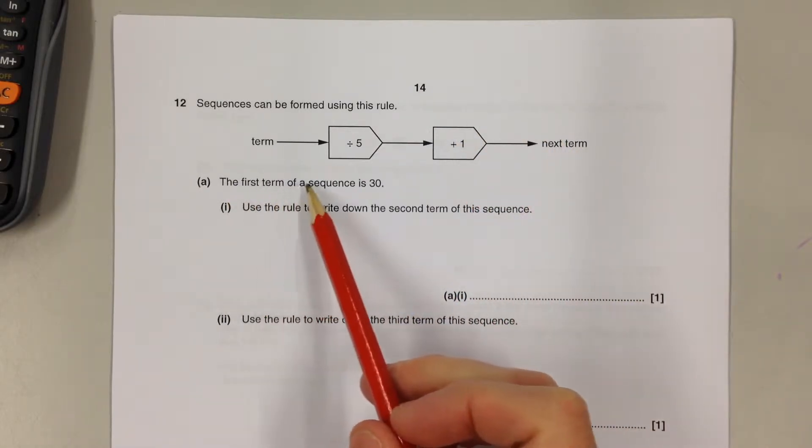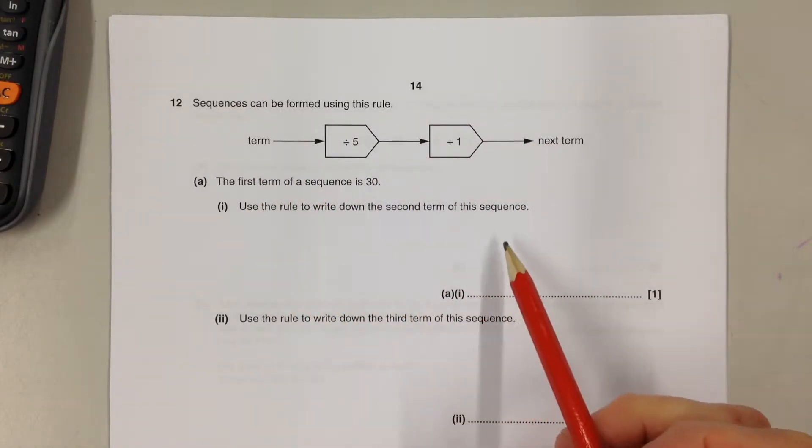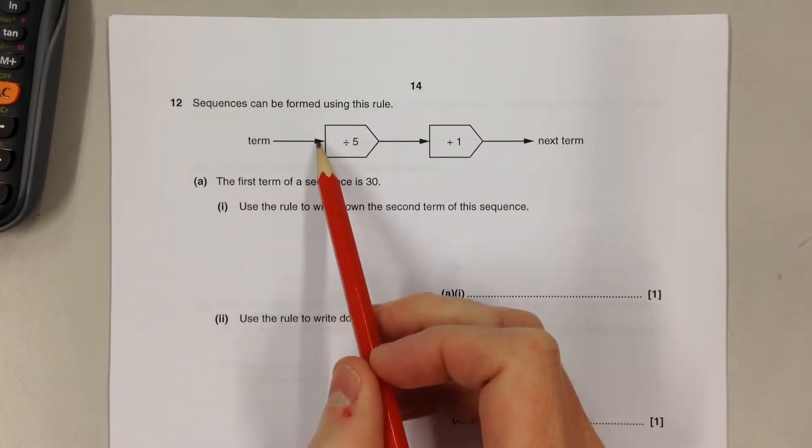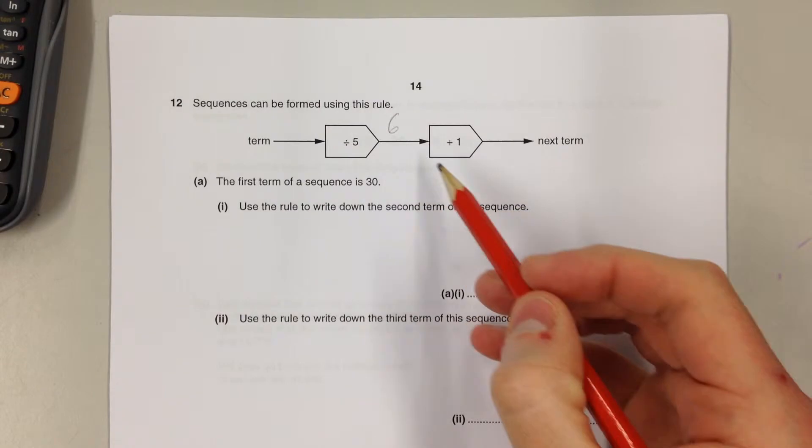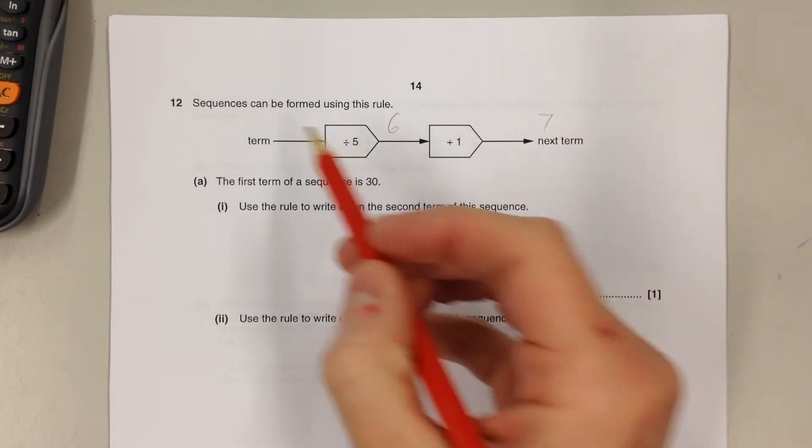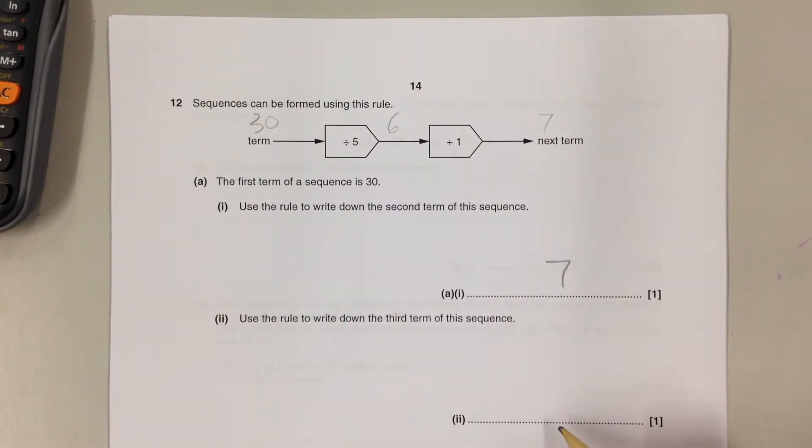If the first term of a sequence is 30, we have to use this rule to write down the second term. So put 30 in here, divide it by 5, gets a 6, add 1. When we put 30 in, 7 comes out.